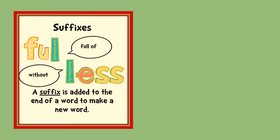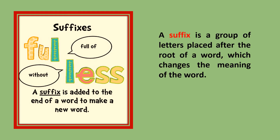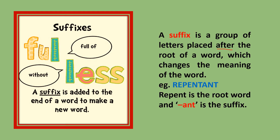Next come the suffixes. A suffix is added to the end of a word to make a new word. Common suffixes include '-ful', meaning 'full of', as in 'beautiful' and 'plentiful', and '-less', meaning 'without', as in 'meaningless' and 'careless'. A suffix is a group of letters placed after the root of a word that changes its meaning. For example, 'repentant' — the root word is 'repent' and '-ant' is the suffix.